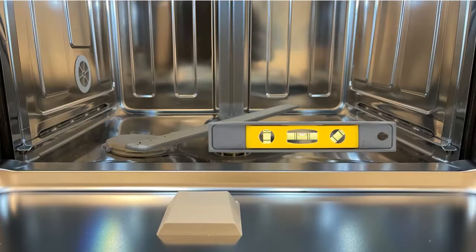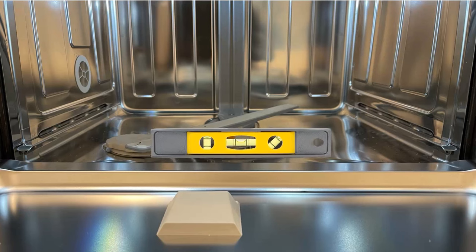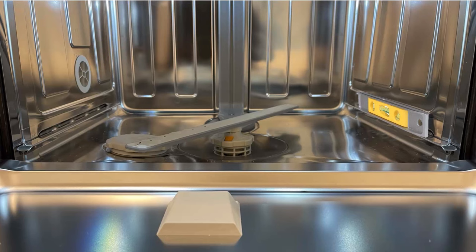Place a small level on the inside front lip of the dishwasher cavity. Adjust the legs on both sides of the dishwasher. Check to make sure the dishwasher is level left to right and front to back. Continue to adjust all feet as necessary in order to properly level the dishwasher.